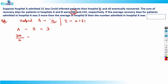For hospital B, the sum of recovery days is 152 and there are A plus 21 COVID patients, so the average recovery will be 152 divided by (A plus 21). The difference between the two averages is equal to 3: 200/A minus 152/(A+21) = 3.